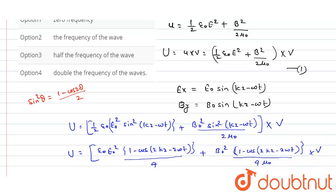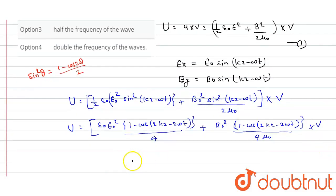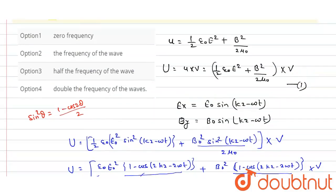As we can see, the energy of the electric and magnetic fields has angular frequency 2 omega. Thus the frequency of the energy of the electromagnetic wave is also double the wave frequency. Looking at the options, option 4 gives double the frequency of the wave, so option 4 is the correct answer. The other options — zero frequency, the wave frequency itself, and half the frequency — are all incorrect.